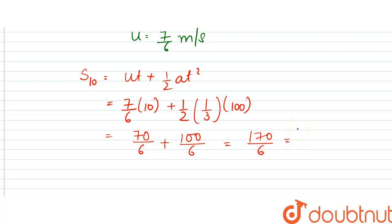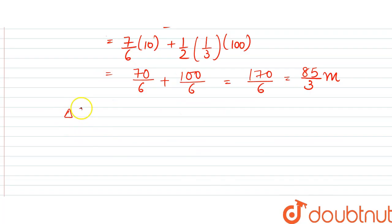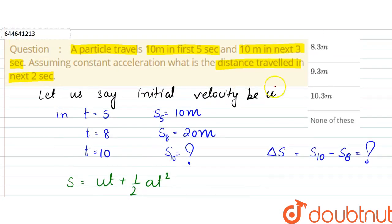That is equal to 85 by 3 meters. Now delta s, in next two seconds how much distance it has traveled, is s10 minus s8, which is equal to 85 by 3 minus 20. So it would be 85 minus 60 by 3, which is 25 by 3 meters. So 25 divided by 3 is 8.33 meters. So our answer would be 8.3 meters. That is option A.